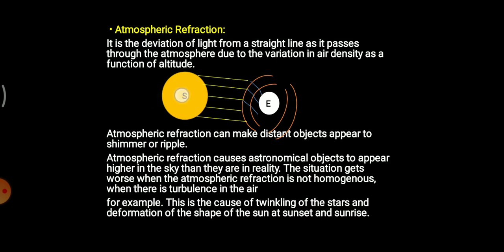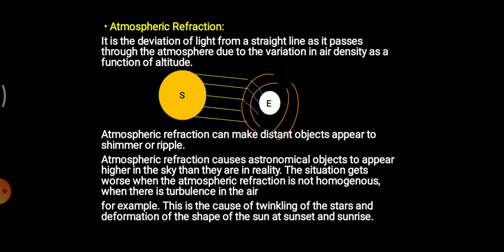A luminous source of light like the sun emits rays of light, and when that ray of light travels through different layers of atmosphere — imagine this brown portion as the first layer and the second one as the second layer of atmosphere — when a ray of light passes through these different layers, it will undergo refraction.